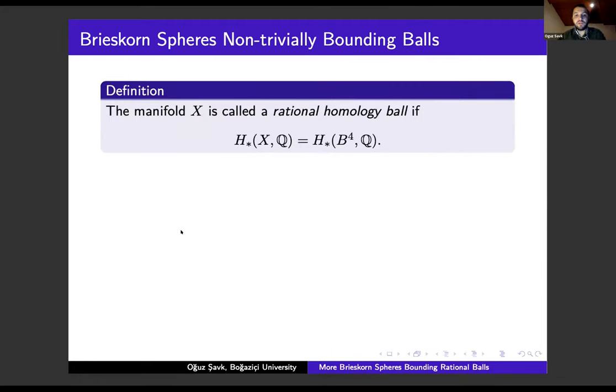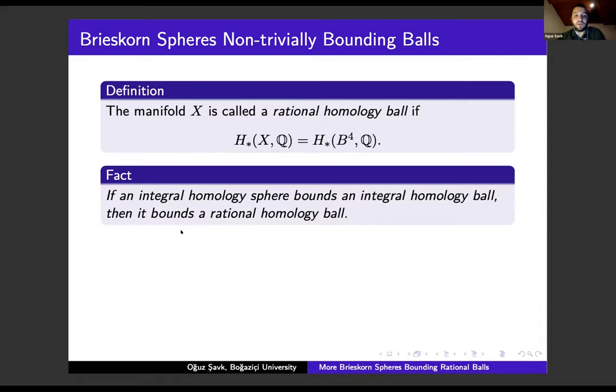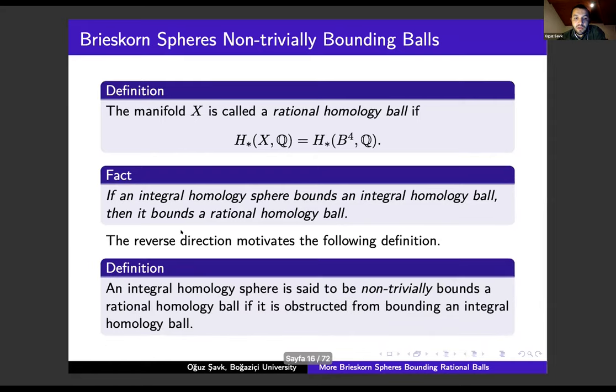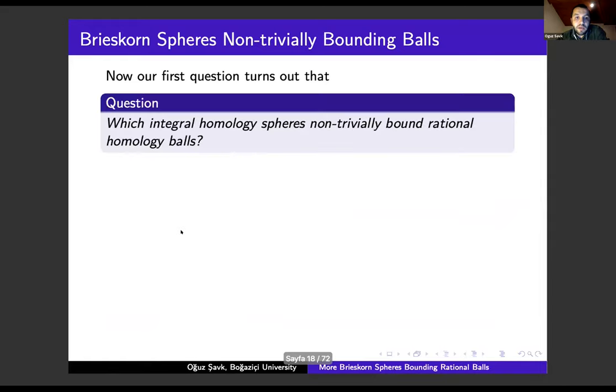This is another definition. The four-manifold X is called a rational ball if it has the same rational homology as the four-ball. This fact: if an integral sphere bounds an integral ball, then it bounds a rational ball as well. The reverse direction motivates the following definition. An integral sphere is said to non-trivially bound a rational ball if it is obstructed from bounding an integral ball. Here the obstruction means you need to calculate some integral homology cobordism invariant and find it is non-trivial.